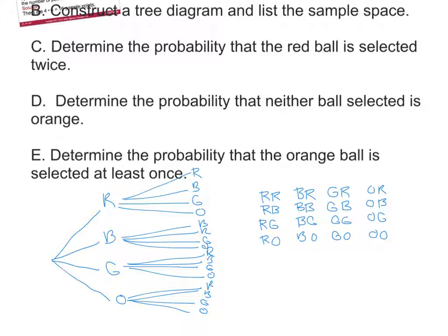Now we can answer probability questions. The first question asks: determine the probability that the red ball is selected twice. In the sample space, there is only one situation where we get red-red, so the probability of getting red-red is 1 out of 16.